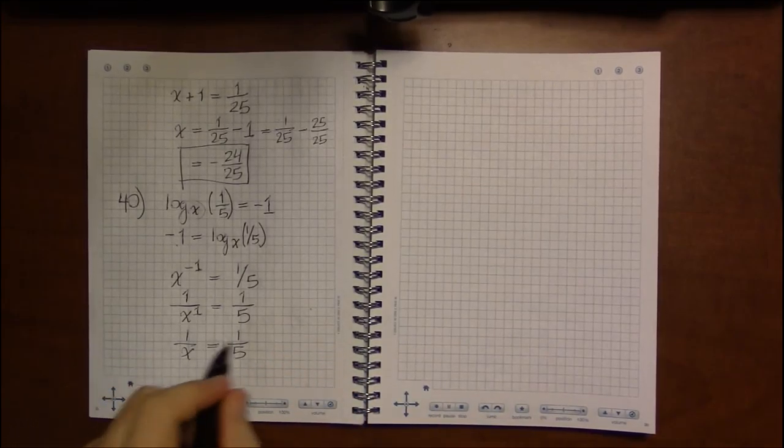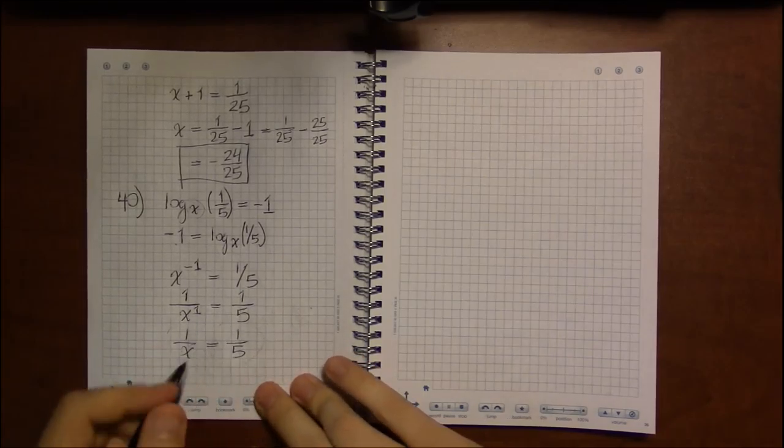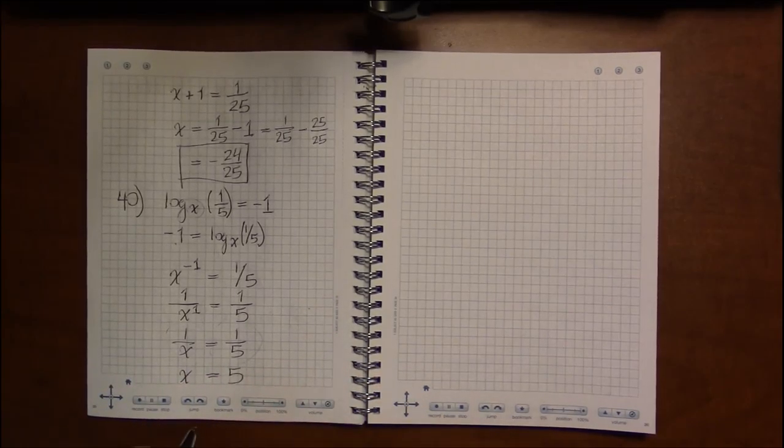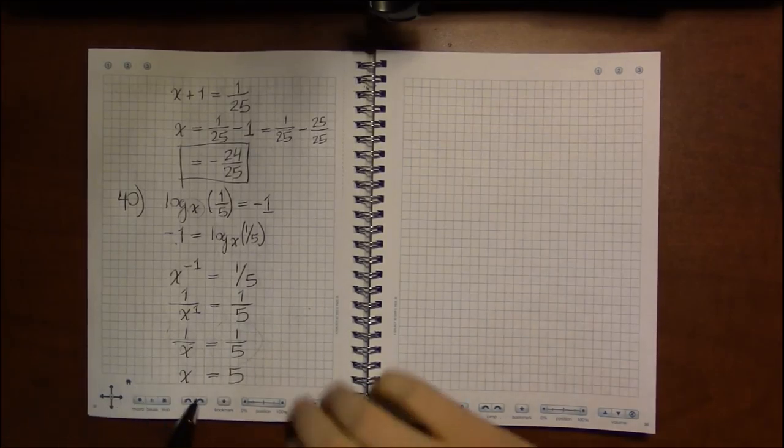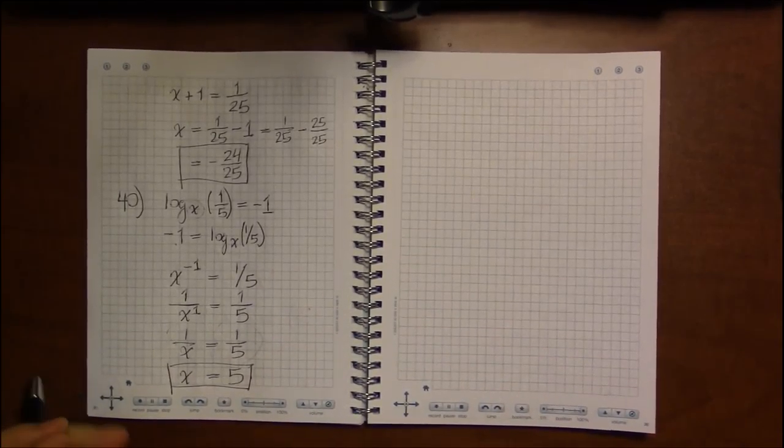Well, you can multiply both sides by x and then multiply both sides by 5. But the truth of the matter is, in order for this side to be this side, x had better be 5. And you'll find out through all the complicated multiply both sides by x, multiply both sides by 5, you'll end up with this very same answer.